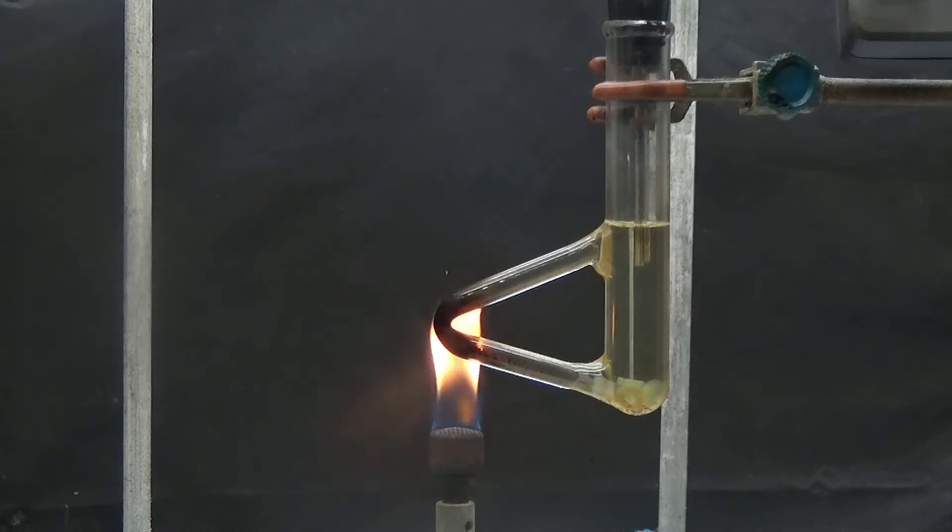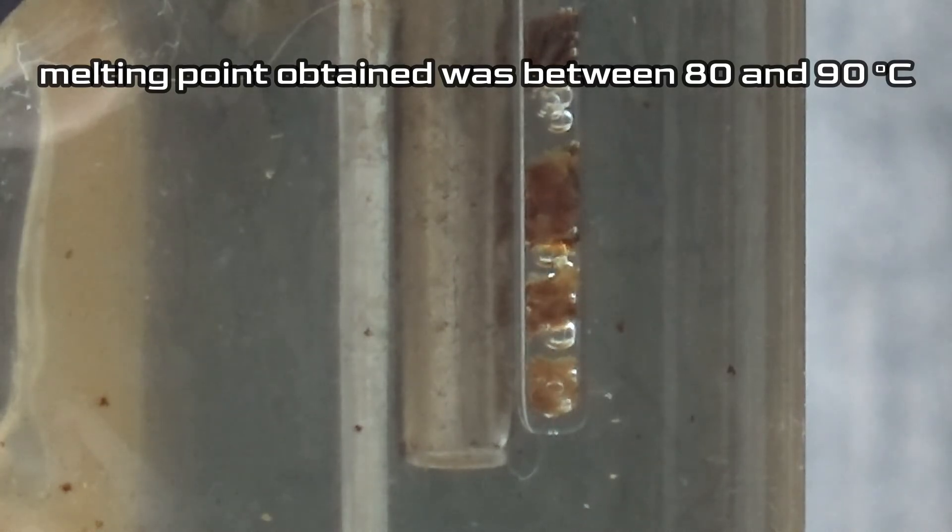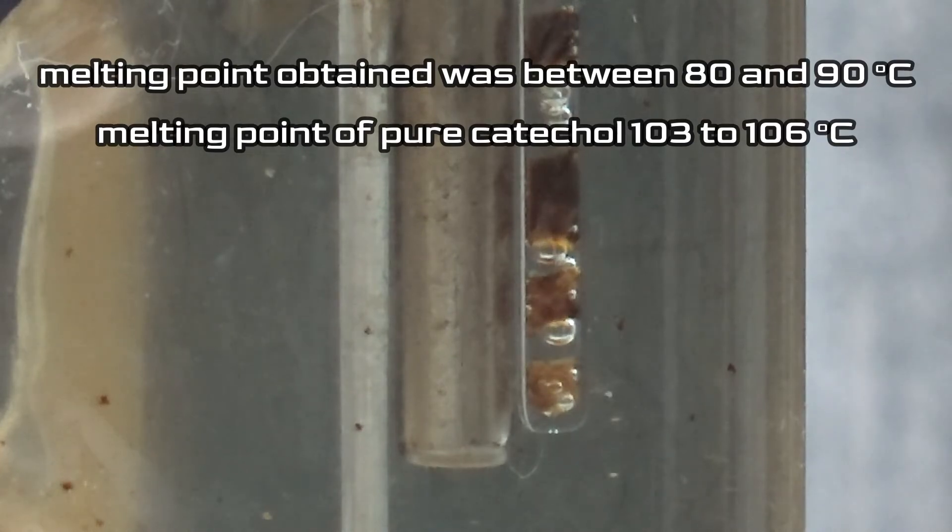We have let the product dry by heat at 40 degrees for a few hours and the melting point has been checked. The melting point obtained was between 80 and 90 degrees, a very low value. The melting point of pure catechol is 103 to 106 degrees.